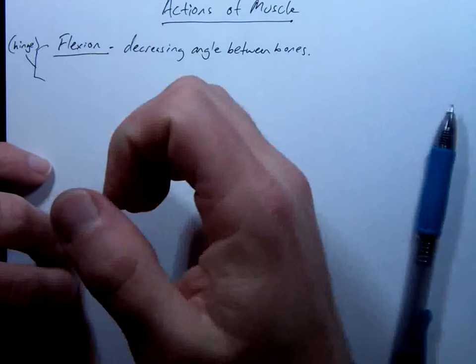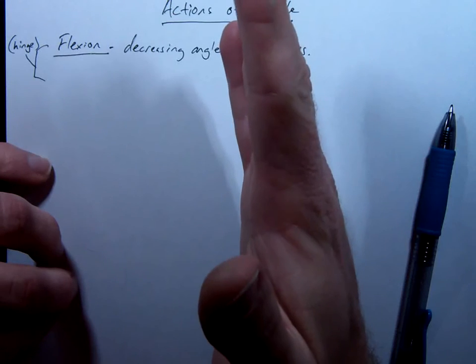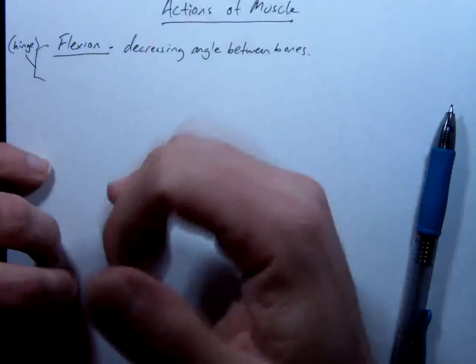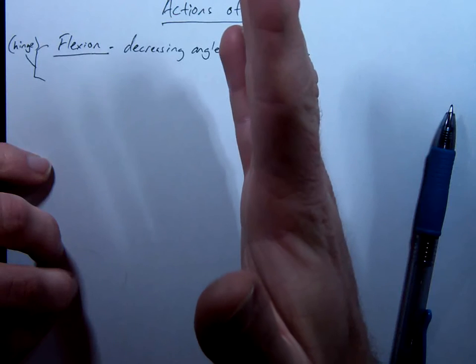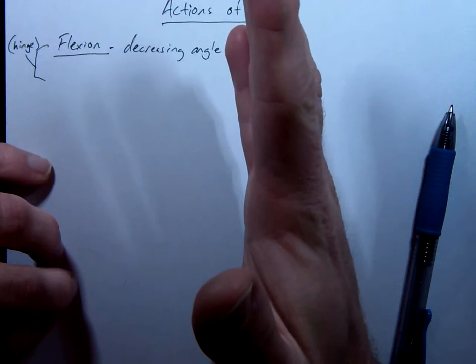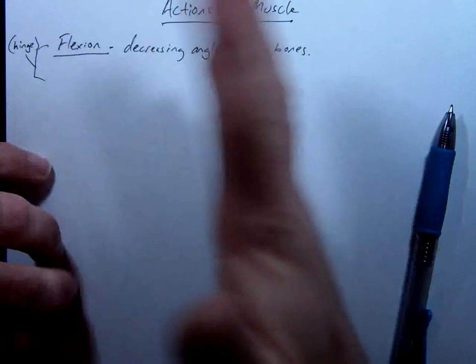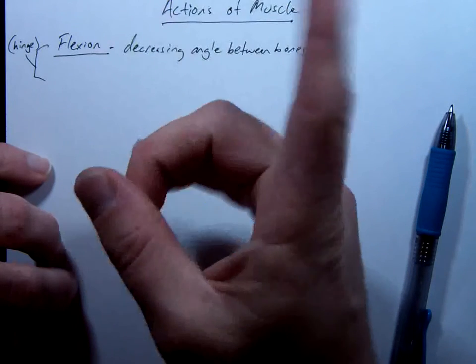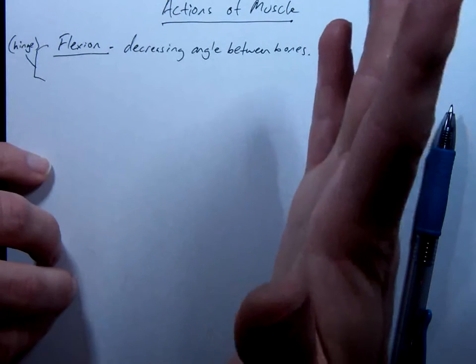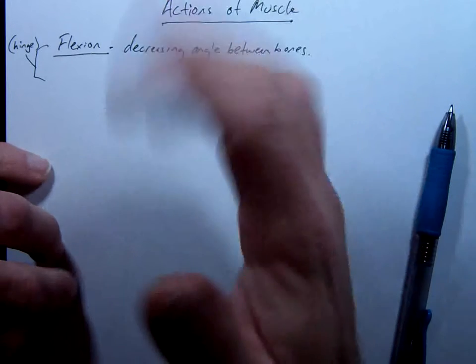What would you call this action? What am I doing with my fingers? I am increasing the angle. This starts with an E. Close. You have the X part right. Extension.